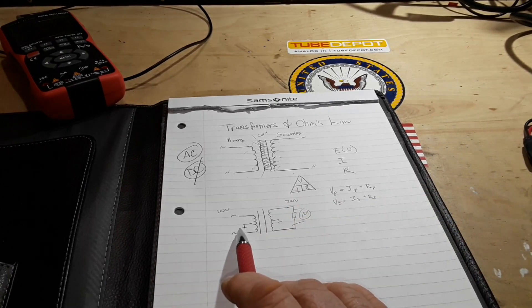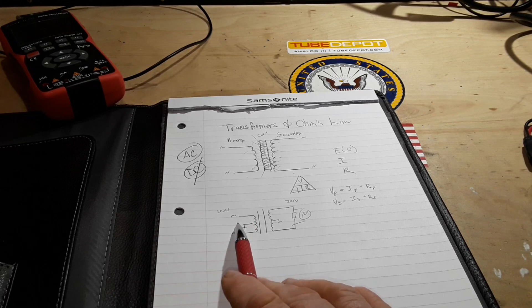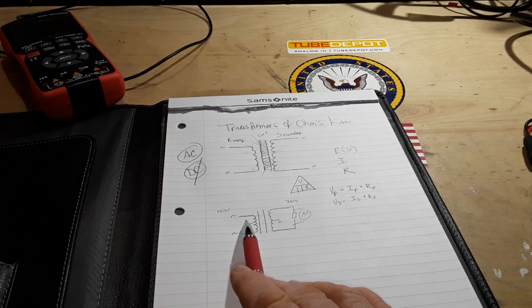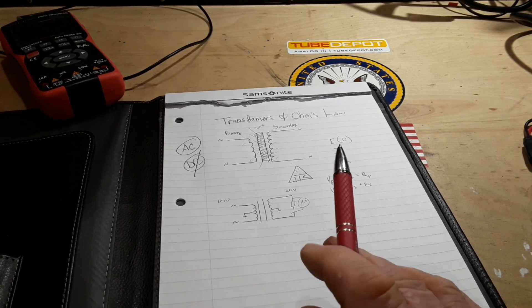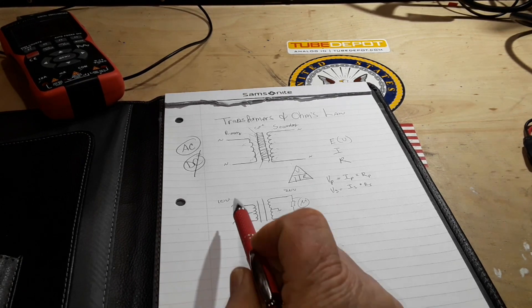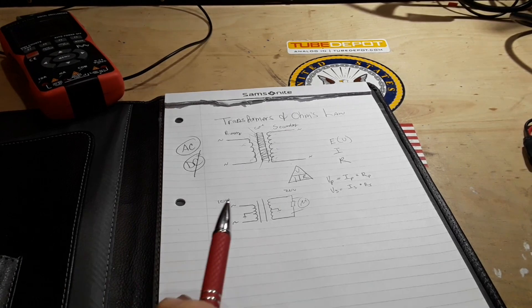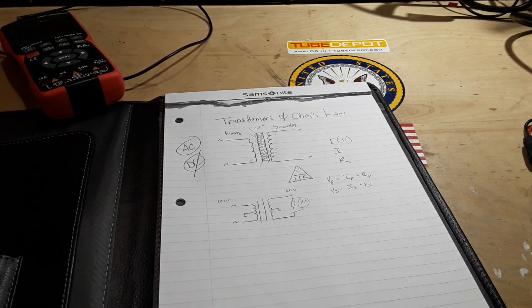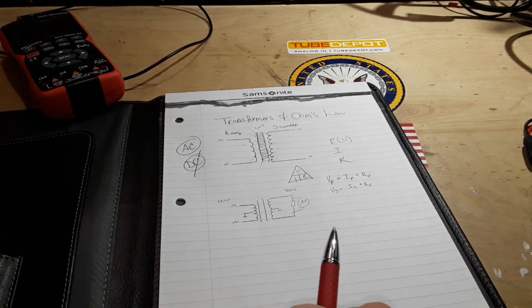But what we're doing is we're taking a lower voltage higher current and we're trading that current for voltage. So there's no such thing as a free lunch. You're not getting this voltage gain without giving up something and what you're giving up is that push. You're giving up the current. But you can go the other way as well.